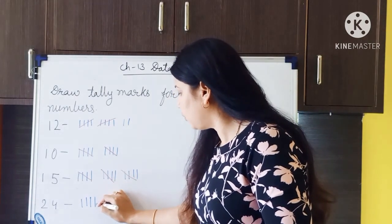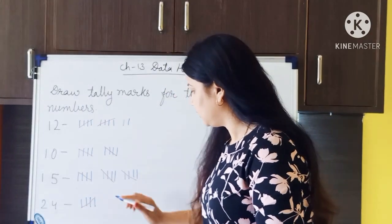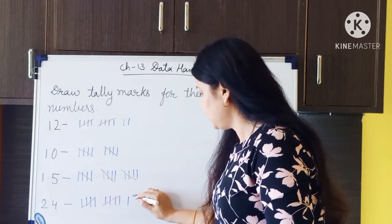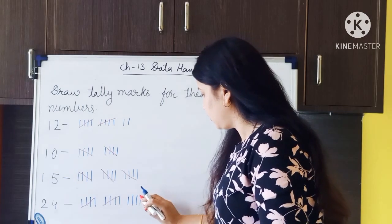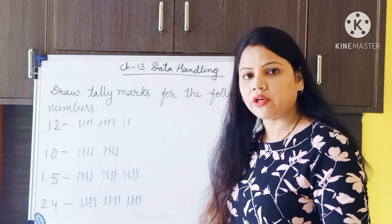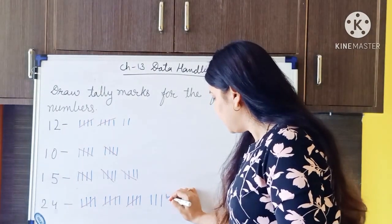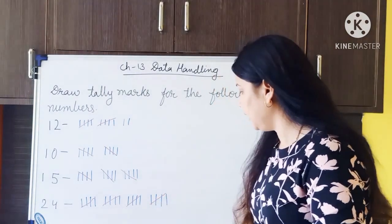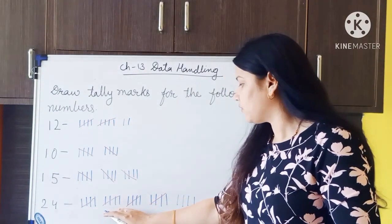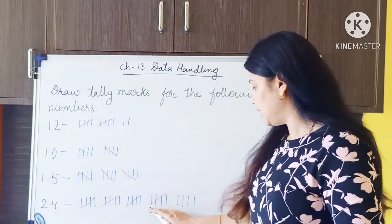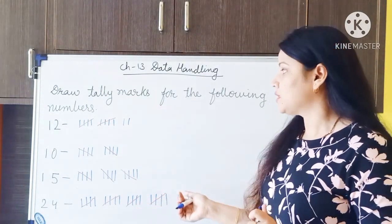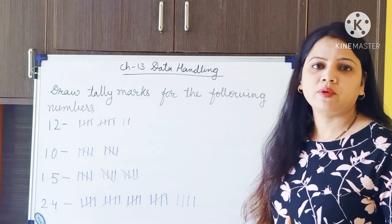Now for 24, we draw four groups of 5, giving 20, then 4 more vertical dashes. So 5 plus 5 plus 5 plus 5 is 20, plus 4 is 24. I hope that tally marks are now very clear to you. Just pause this video and write these examples in your maths notebook. Thank you.